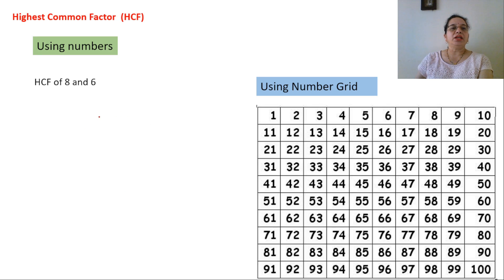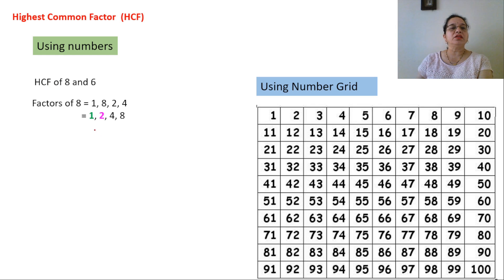The first activity we will do is using numbers. HCF of 8 and 6 — HCF means highest common factor. So we will write the factors of 8. What are the factors of 8? 1 and the number itself, and 2 fours are 8. I have arranged these four numbers in ascending order: 1, 2, 4, 8 are the factors.